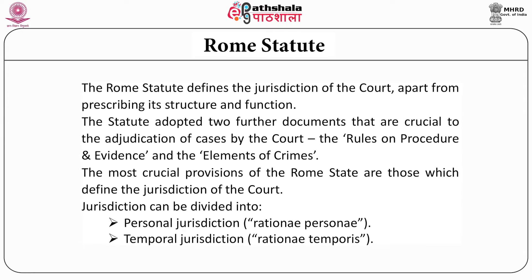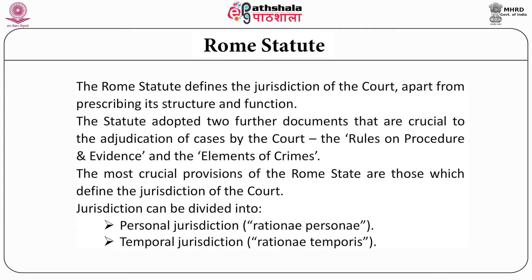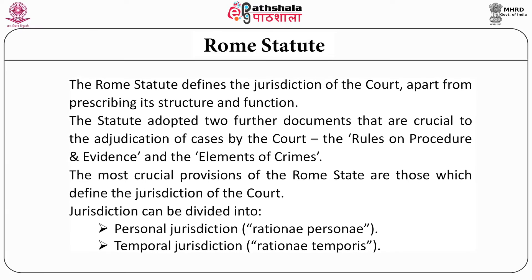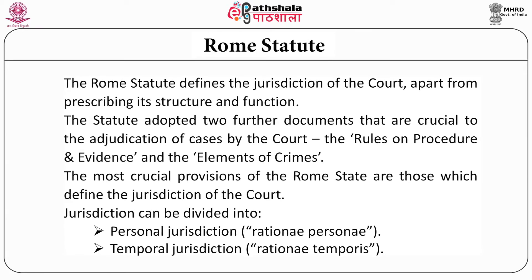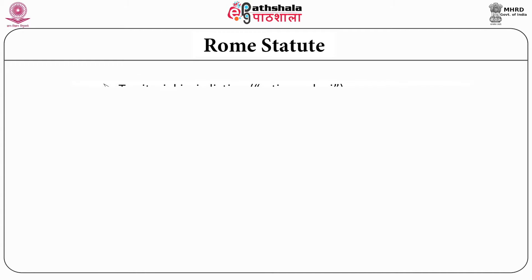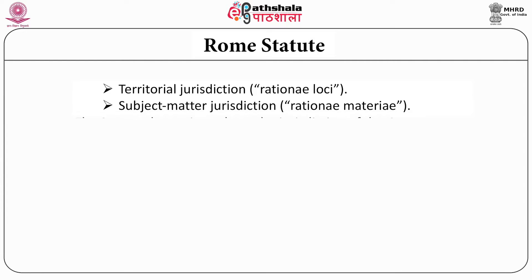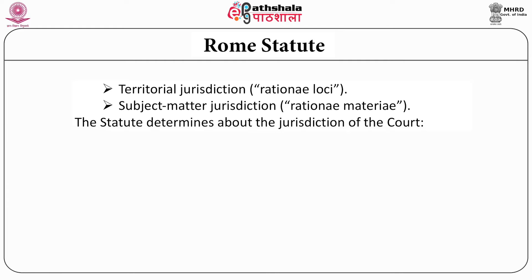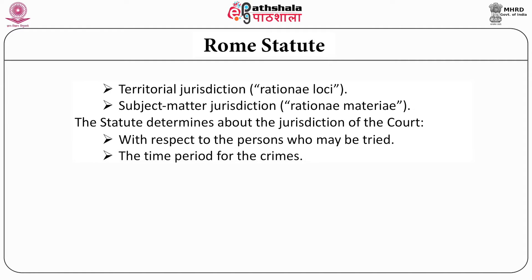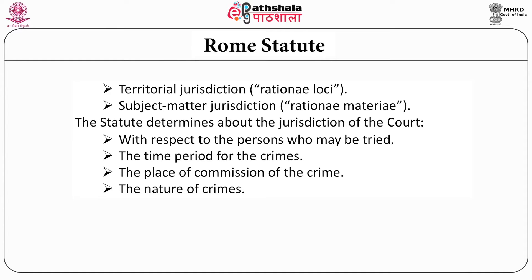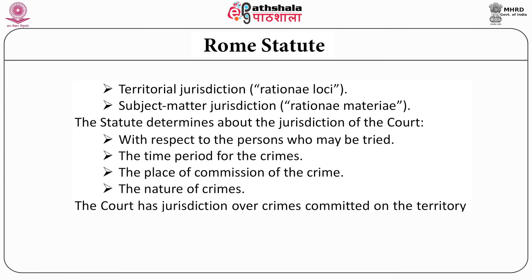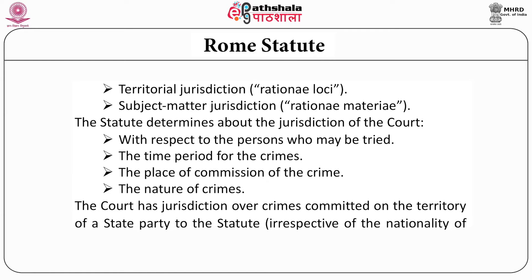Broadly, jurisdiction can be divided into questions of personal jurisdiction (ratione personae), temporal jurisdiction (ratione temporis), territorial jurisdiction (ratione loci), and subject matter jurisdiction (ratione materiae). In plain words, the statute determines questions about the jurisdiction of the court with respect to the persons who may be tried, the time period for the crimes, the place of occurrence of the crime, as well as the nature of crimes which have been committed.